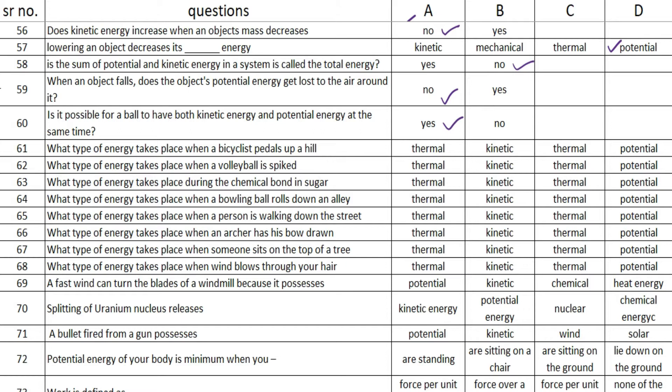The next one is: what type of energy takes place when a bicyclist pedals up a hill? The answer is option B — kinetic. The next one is: what type of energy takes place when a volleyball is spiked? The answer is option B — kinetic.